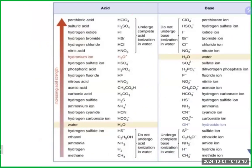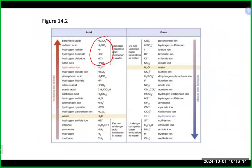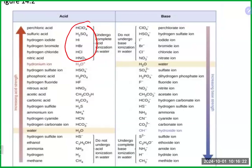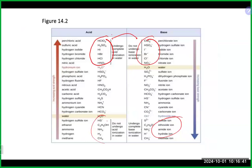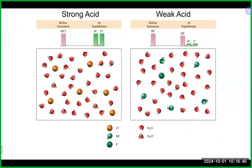A table in your book lists the six strong acids and shows the opposite relationship with their conjugate partners — strong acids have weak conjugate partners, while weak acids have stronger conjugate partners. If you remember those six strong acids, you'll be in good shape to identify whether an acid is strong or weak. For strong acids and strong bases, they break 100% apart into ions; for weak acids and bases, much less ionization occurs.